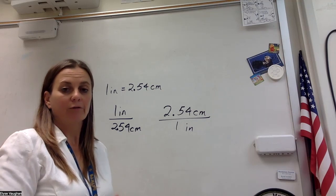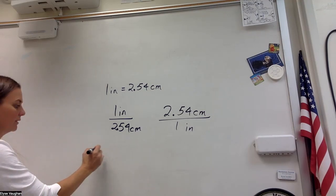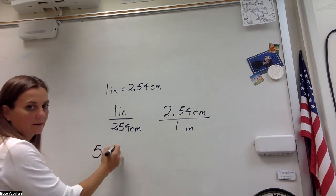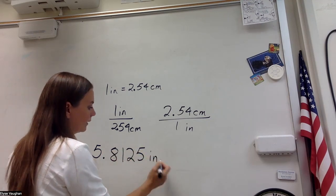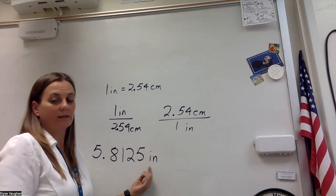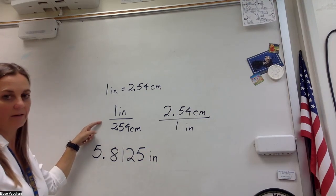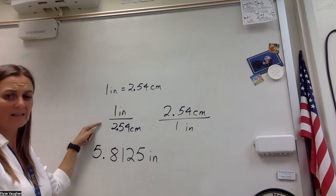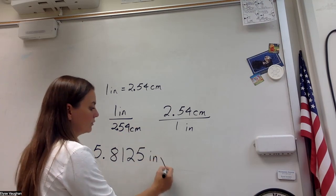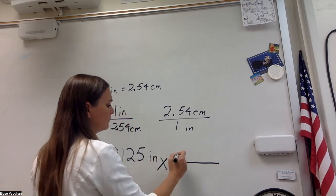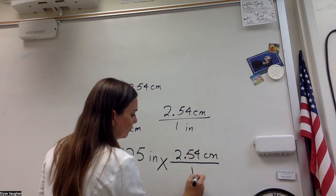In this case, we're trying to convert from inches. So we're going to go with our starting point, which was 5.8125 inches. Now I want to get rid of inches, and I want to get centimeters. And so if I multiply by this fraction, I'm going to have inches times inches over centimeters, and that's not going to get rid of the inches. So I'm going to use this fraction instead, and I'm going to multiply by that fraction. So that gives me 2.54 centimeters over one inch.